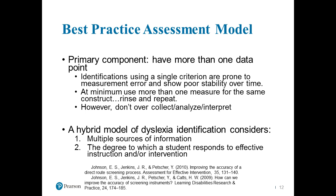It is also important that we take two different data points or two different criteria to validate a specific weakness. However, the third point is: don't over-collect, analyze, or interpret. Don't just throw out a net and try to get as much as you can. That tends to lead us down a pathway of over-interpretation, which I highly suggest against. Find two, possibly three data points that will corroborate or confirm your findings and move on.